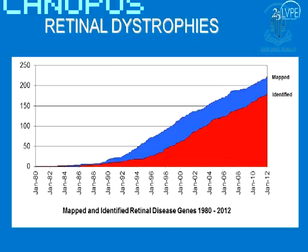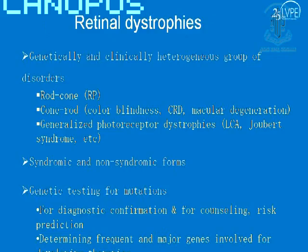A word about retinal dystrophies: this slide shows the number of genes known over time. After January 2012, there are well over 200 known genes, which tells you how genetically complex these diseases are. There are different subtypes — rod, cone, cone-rod — and generalized photoreceptor dystrophies, as well as syndromic and non-syndromic forms. Genetic testing is used for the same kinds of purposes already mentioned.